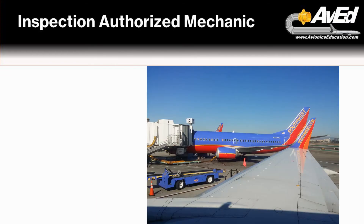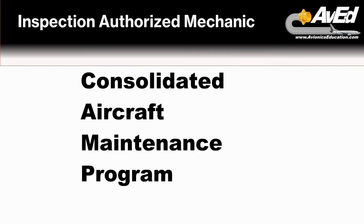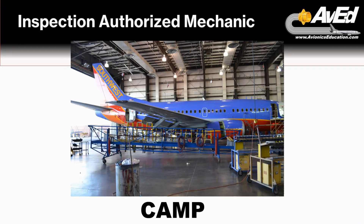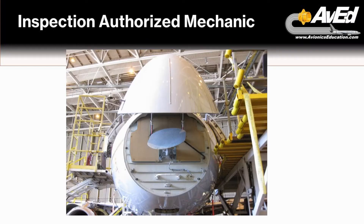What it is not for is an aircraft that operates under a CAMP, or consolidated aircraft maintenance program. These tend to be large aircraft — air carrier aircraft, the airliners you know — which means they have their own inspection requirements. When I worked for the airlines, that was an RII.